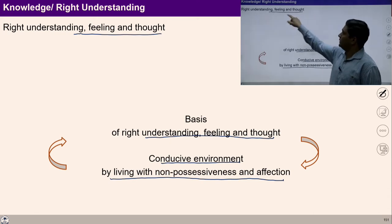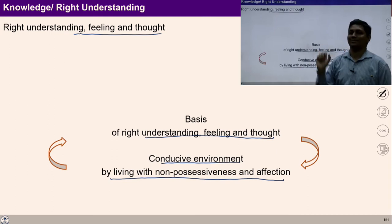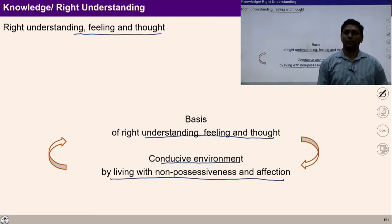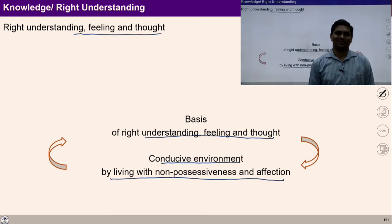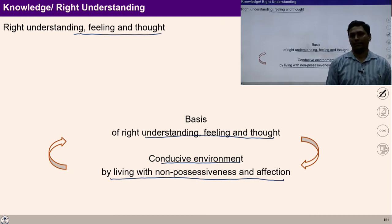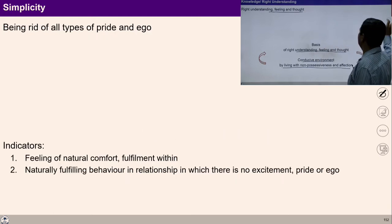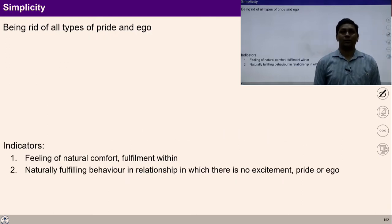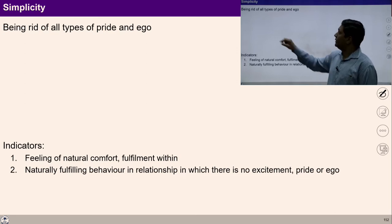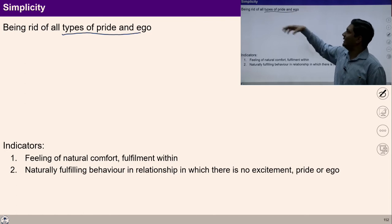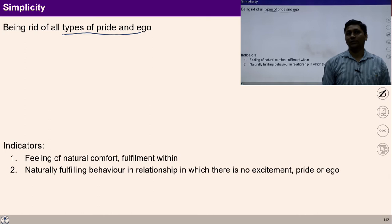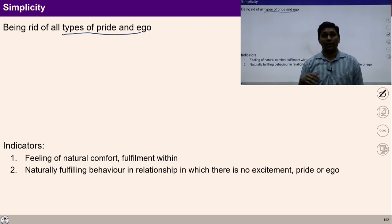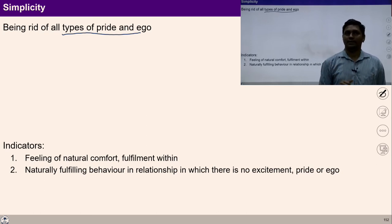The feeling of affection and non-accumulation combined with knowledge helps us to live in harmony and see our participation for the rest of society and nature. Based on knowledge, we can get rid of all types of pride and ego. Once we understand reality, our living gets self-organized. Living egolessly with right understanding is simplicity.